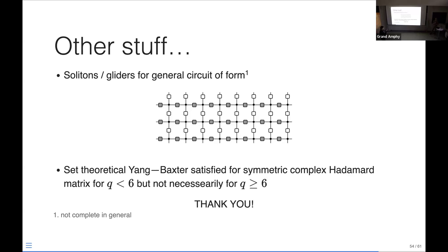Maybe another question: is there any chance that some of this behavior survives Trotterization, or appears in Hamiltonian dynamics? If I try to go to continuous evolution, that's a very big step of course. Is there a chance you can build Hamiltonian models of solitons from this, or Hamiltonian models with some of this physics in real continuous time? Not within this class — but you'd have to use the generalized dual-unitary structure that people have been studying lately, because the point there is you can go all the way to the identity matrix, or the Trotter limit. So these ones are very different; you need a construction like that which worked in that case.